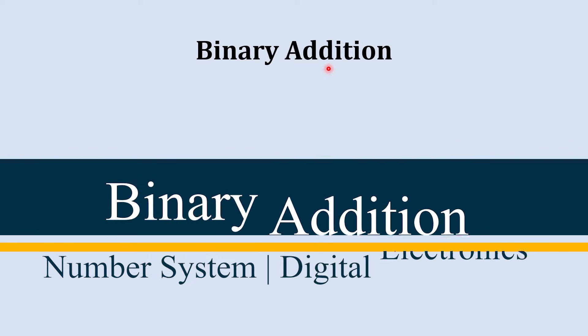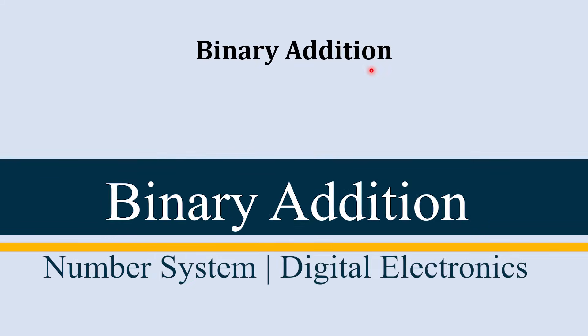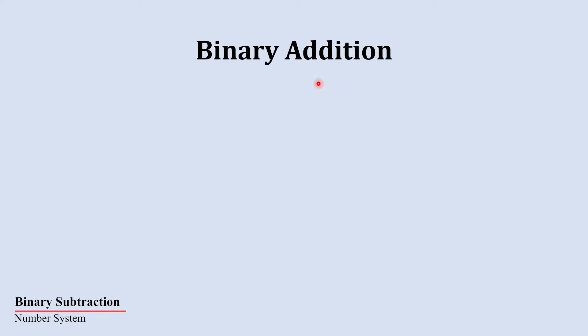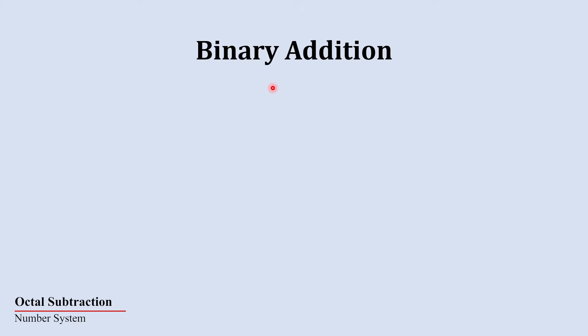In this video we are going to learn binary addition, with two examples of two-layer and three-layer addition. Binary addition is similar to decimal addition, but the only difference is that binary addition is limited to only two digits: 0 and 1.